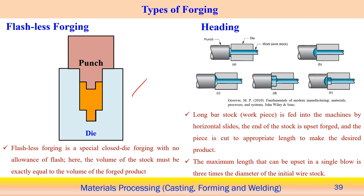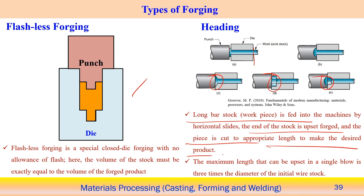Heading is another type of forging operation where a long stock bar is used and a punch is applied on one end to form a head — flat head, curved head, or other shapes. The length of the component is decided along the die length, and the maximum length that can be offset in a single blow is three times the diameter of the initial wire size.